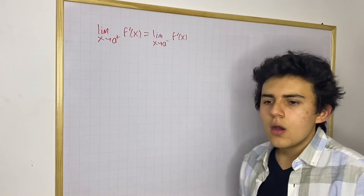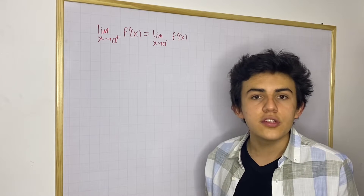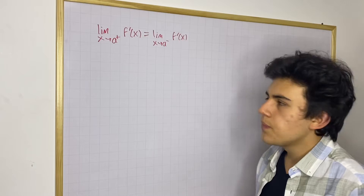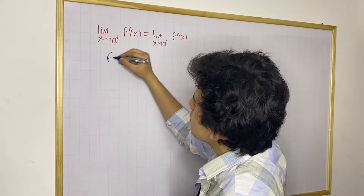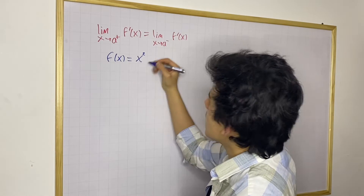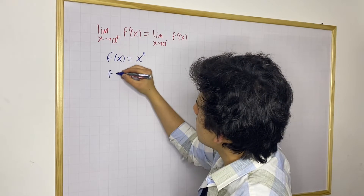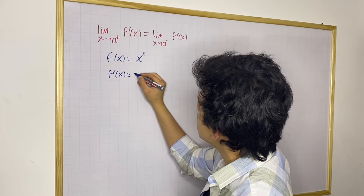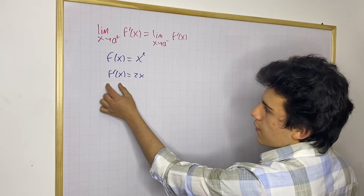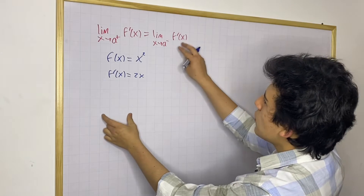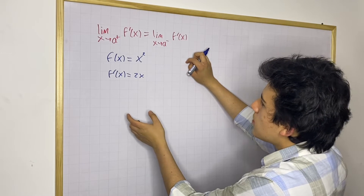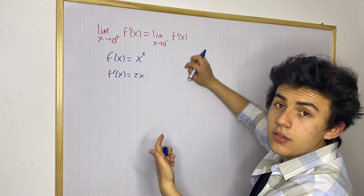Now I want to give you some examples of functions that are differentiable and some that are not differentiable. Let's go over x squared. We define a function f of x equals x squared. First, let's find the derivative. f prime would simply be 2x — we can find this using the power rule. Now we have f prime of x, which is what the definition tells us we need to use. What if we try to find these limits at x equals 0?